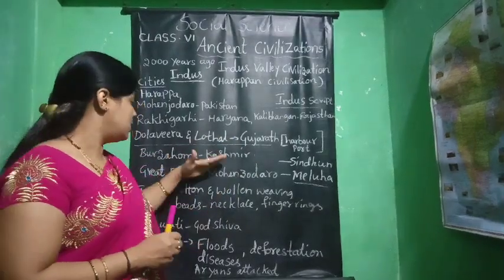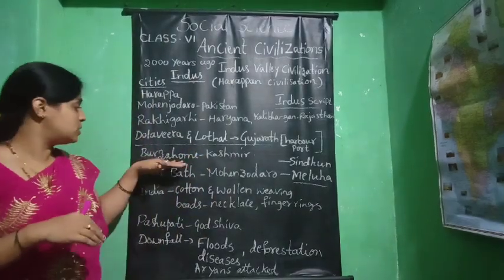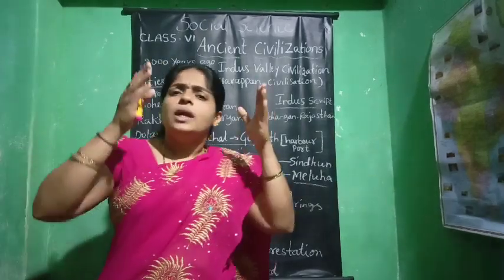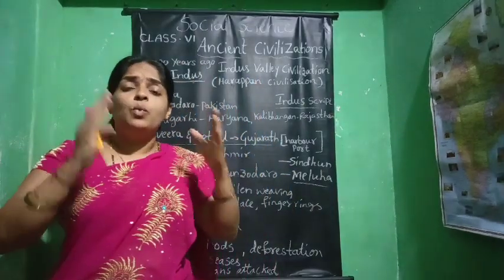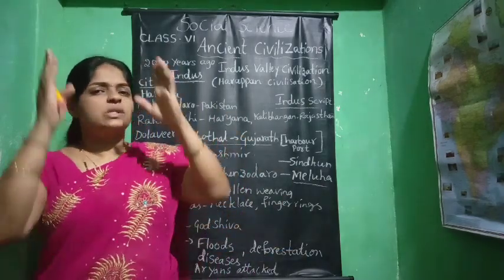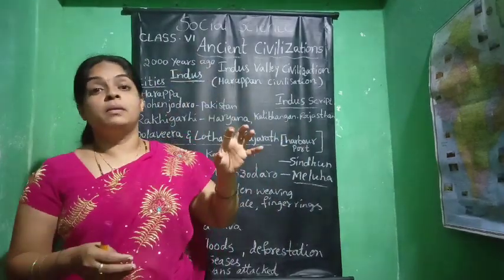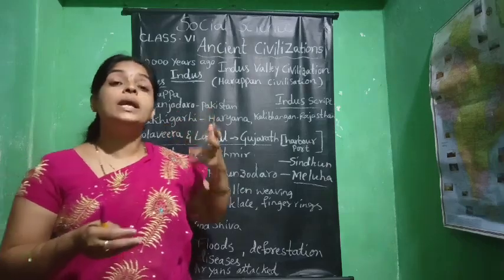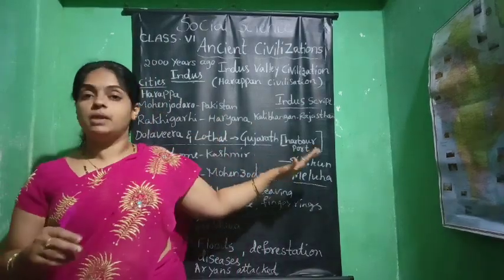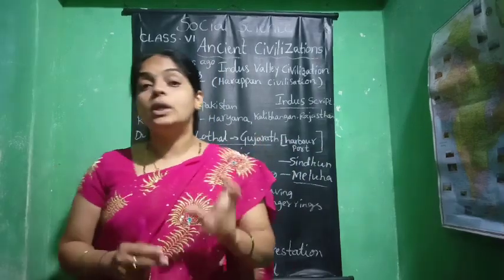During the winter season in Kashmir, they made underground homes — the Barja home — to protect themselves from the cold. Cotton and woollen cloth they were producing more. India was the first to introduce cotton — Indian people only started growing cotton.